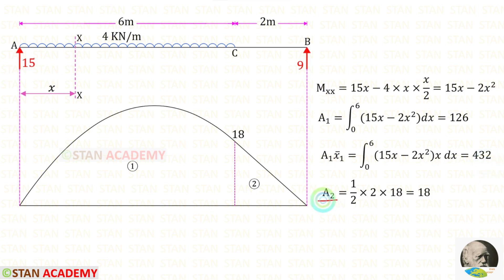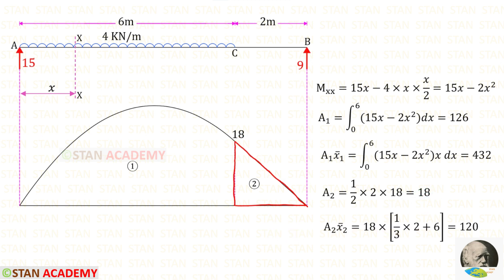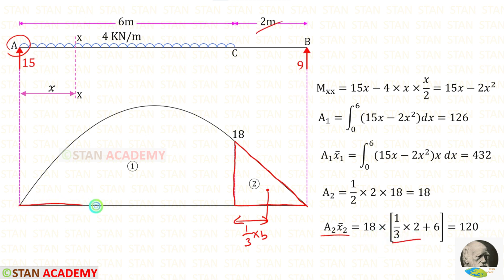Now let us find area 2 and x̄₂. We know it is a triangle, so we use the area formula: half × base × height. The breadth is 2 and the height is 18, giving area 2 as 18. For area 2·x̄₂ about point A, the centroid of the triangle from the back is 1/3 × breadth = 1/3 × 2, and we add the remaining distance of 6. For area 2·x̄₂ we will get 120.